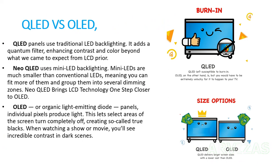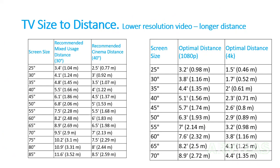TV size to viewing distance: the lower the TV size, the lower the resolution video, and the longer the required viewing distance. For a 55-inch TV, you will need Full HD video at 2 meters. For 4K content, you only need 1 meter. If you watch 480p or 720p resolution, you will need 3 to 4 meters from the TV to your sofa. Remember: lower resolution means a longer viewing distance.